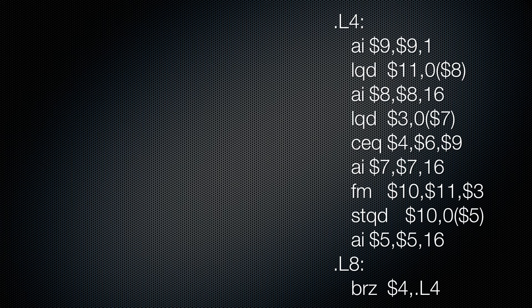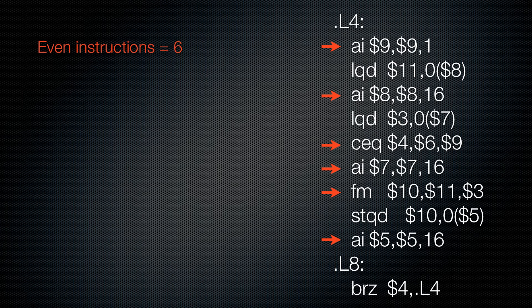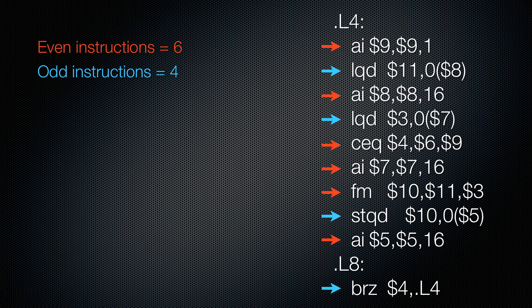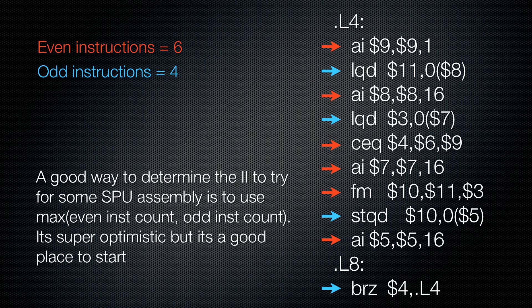Here's the assembly code from the original video. Instructions with red arrows are even pipeline instructions, and there are six of them. Instructions with blue arrows are odd pipeline instructions, and there are four. If I had to guess my minimum initiation interval — the window I want to schedule things in — I would say six. The reason: if you had a schedule of five slots, there's no way to schedule six even-pipeline instructions into only five slots. So it's basically the max of those two. It's super optimistic and may or may not result in a workable schedule, but it's a great place to start.